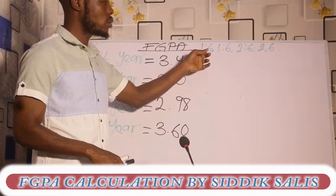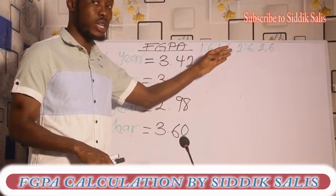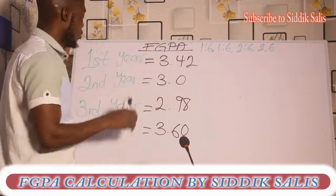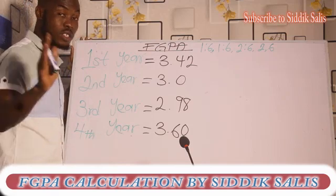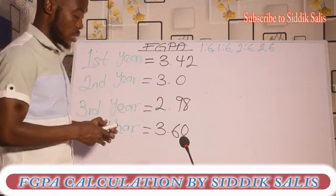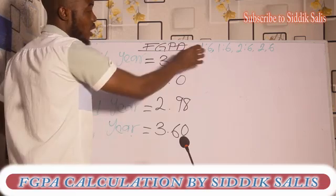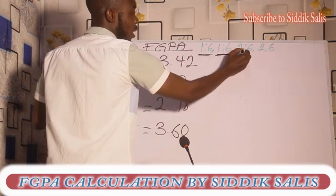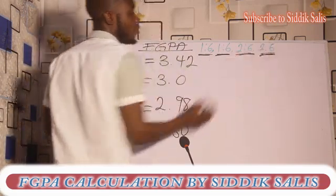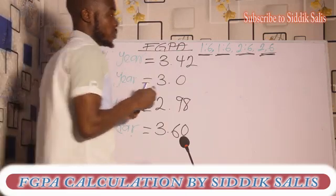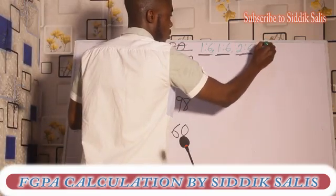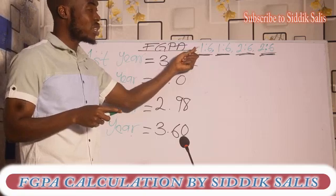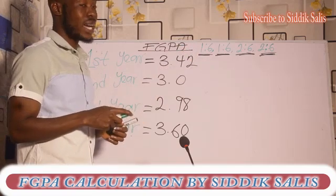This 1-to-6 ratio is the theory used for calculating the FGPA. This applies for the first year, the second year, the third year, and the fourth year. Every year you take, you're going to multiply it by one divided by six.